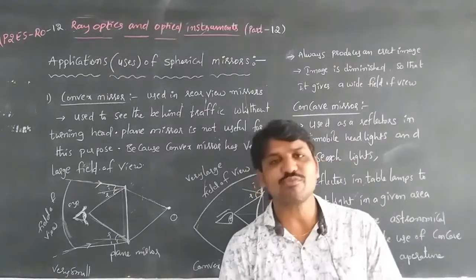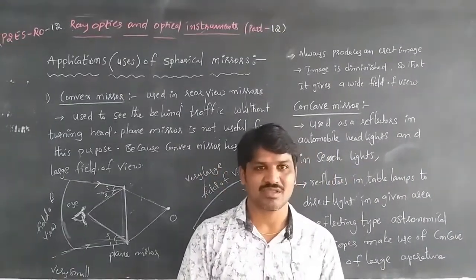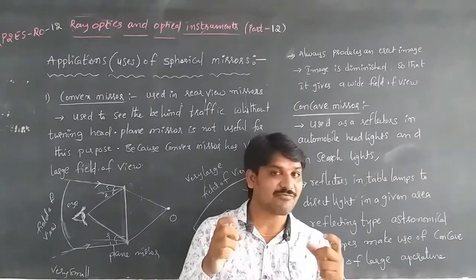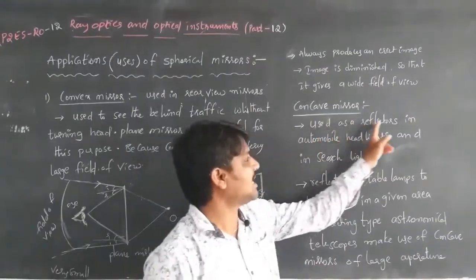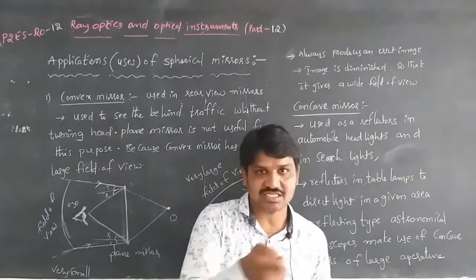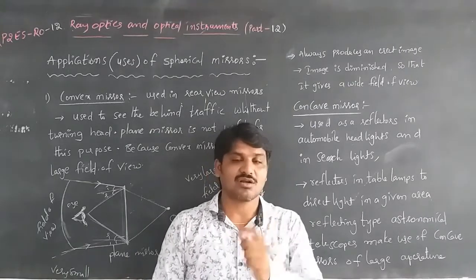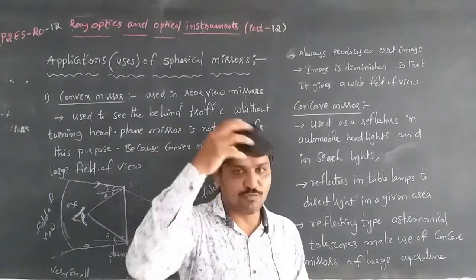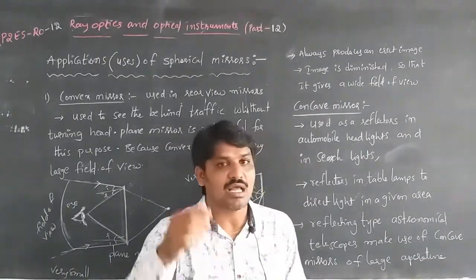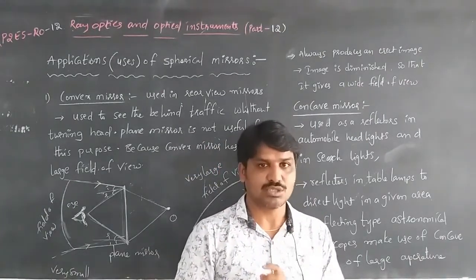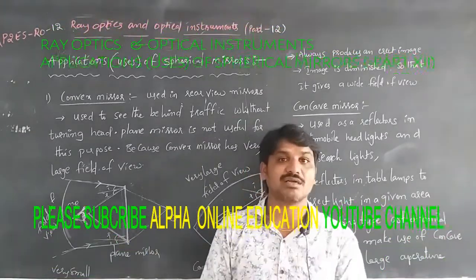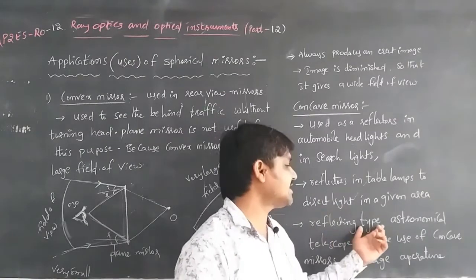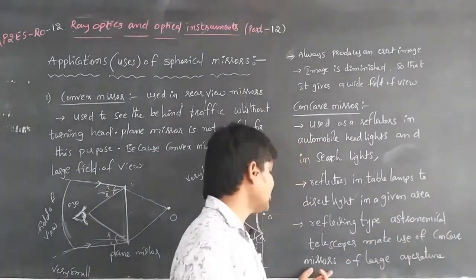Concave mirrors are used for reflecting purposes. They are used as reflectors in automobile headlights, search lights, and torch lights. In table lamps, concave mirrors are used to focus light on a particular area. Reflecting type astronomical telescopes also make use of large aperture concave mirrors.